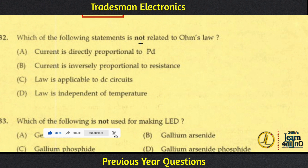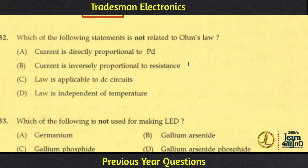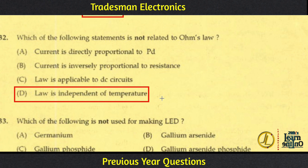Which of the following statements is NOT related to Ohm's Law? Option A states power is directly proportional — this relates to power dissipation. Option B states current is inversely proportional to resistance — this is Ohm's Law (V=IR). Option C states the law is applicable to DC circuits. Option D states the law is independent of temperature — this is NOT a statement of Ohm's Law, since resistance varies with temperature. Therefore Option D is the answer.